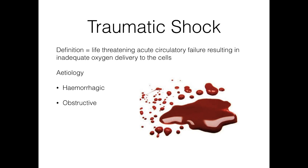Then we have obstructive shock, such as in tension pneumothoraces and cardiac tamponade — slightly rarer in their presentation, but not to be forgotten. Distributive shock, such as in neurogenic injuries in trauma. And then finally, cardiogenic shock, which we often forget about in trauma.